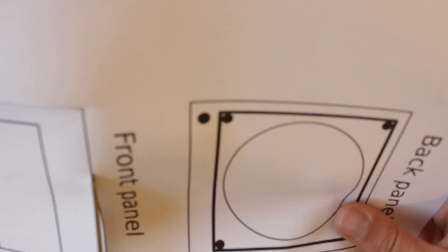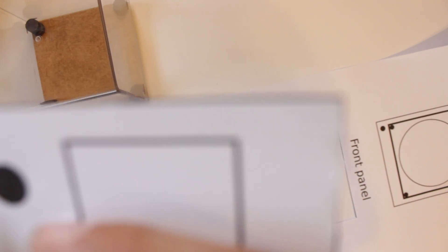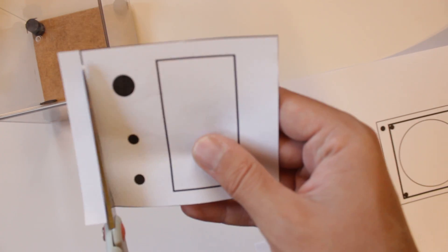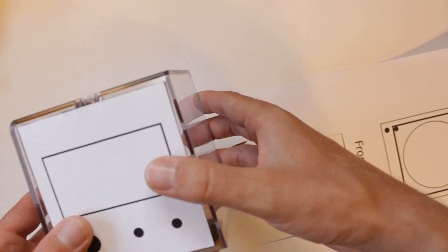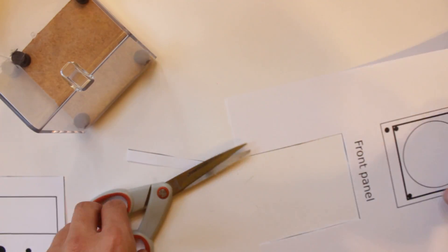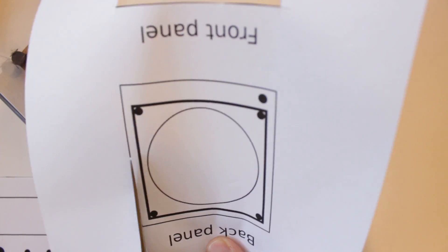First I started with preparation of my enclosure. I printed templates for the front and back panels. The front panel will have the voltage regulator with display, switch, and two binding posts. The back panel is for the fan and DC plug.